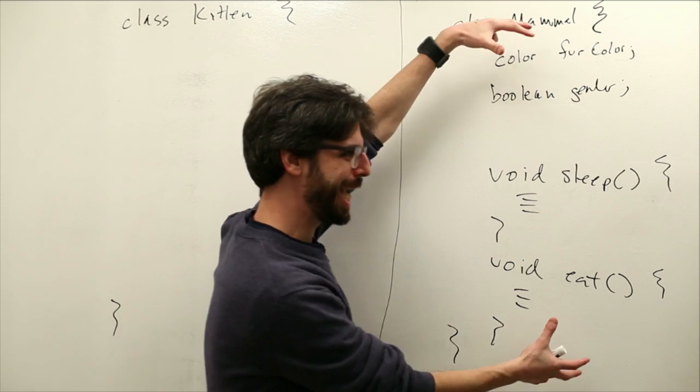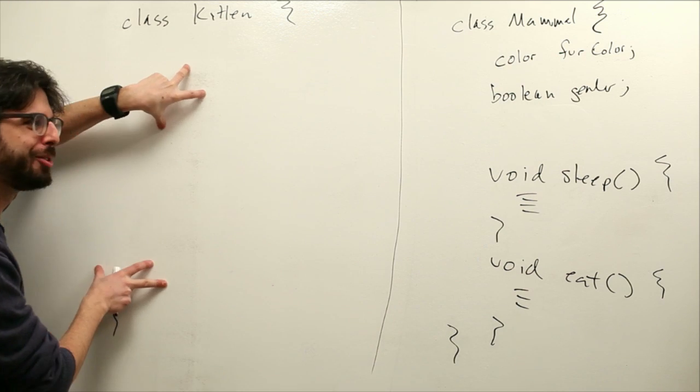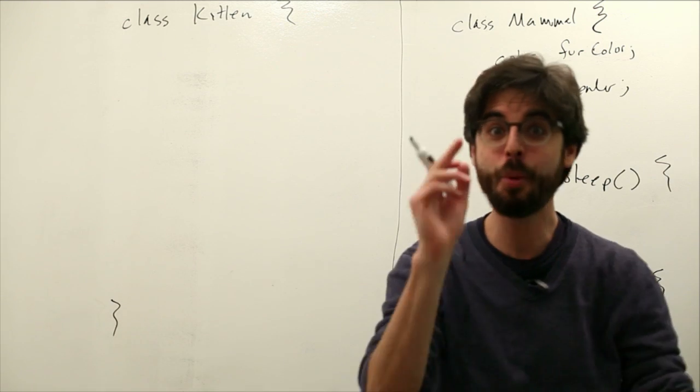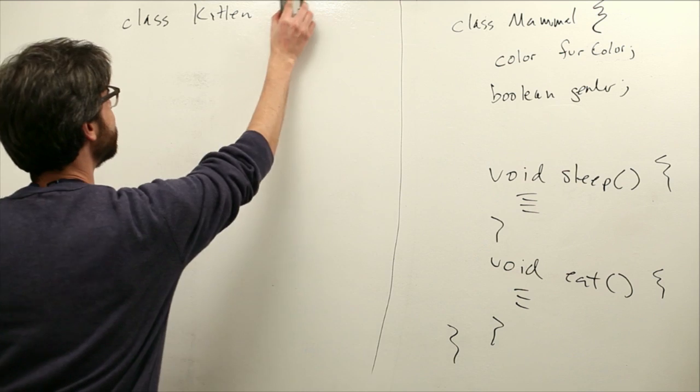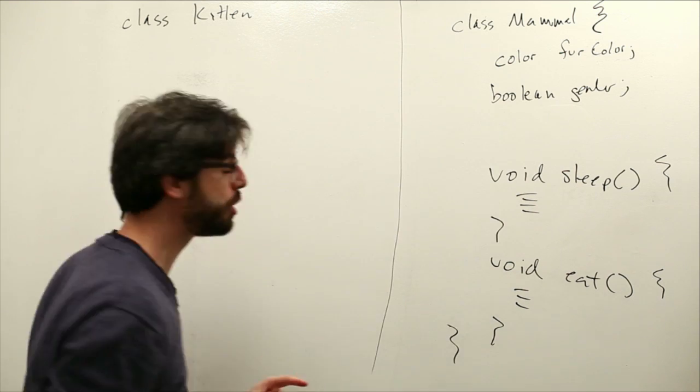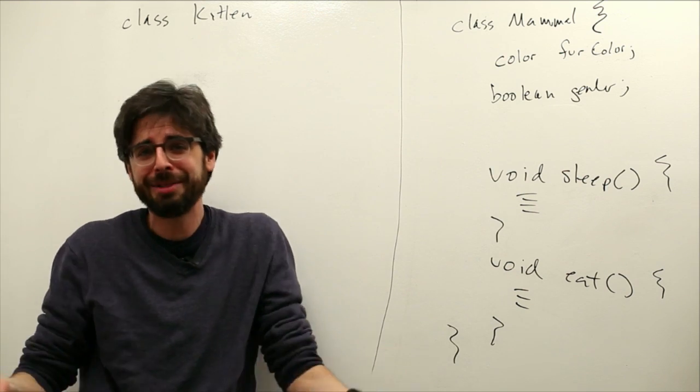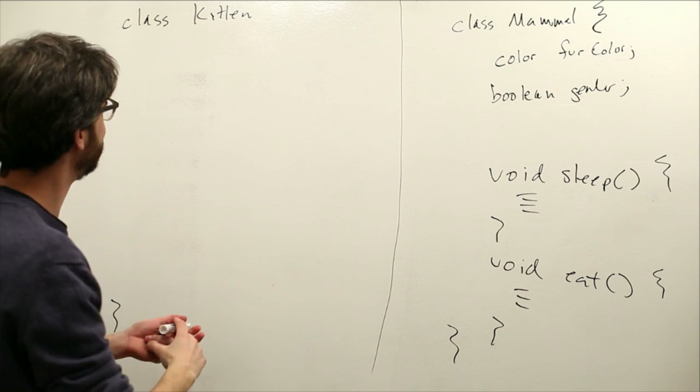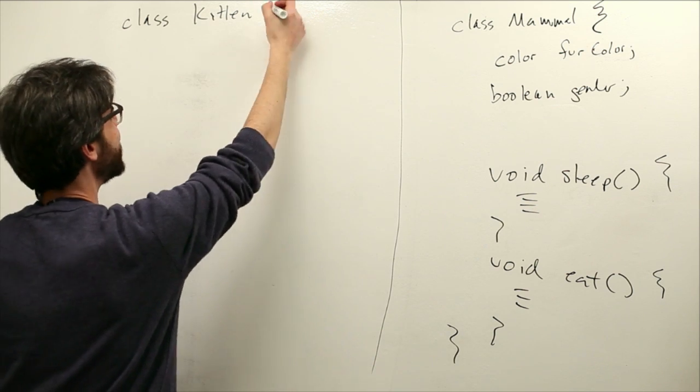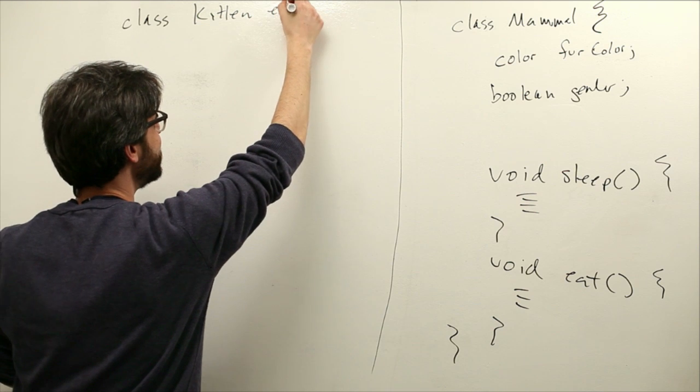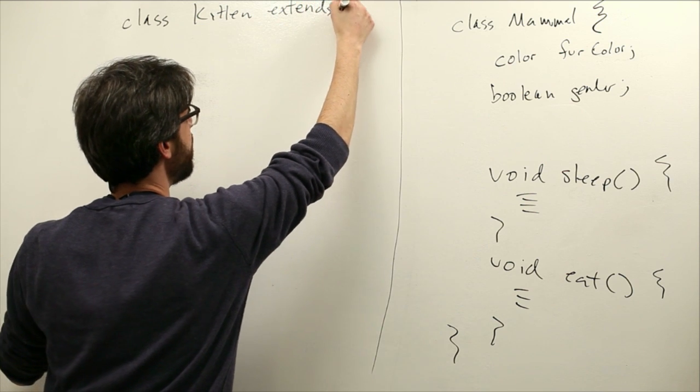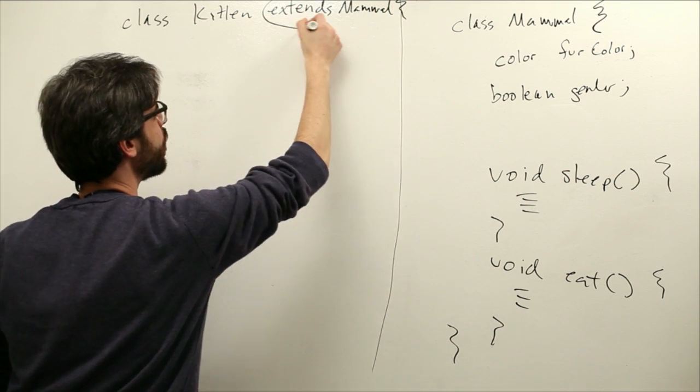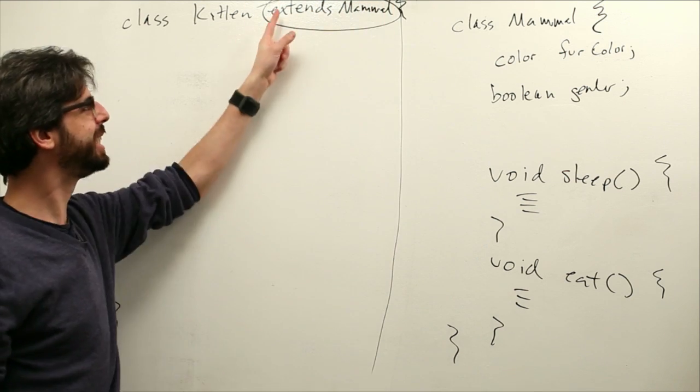We could copy, paste all this code so we start from the base mammal class, or we could use the principle of inheritance. And the way that we're going to use the principle of inheritance is with some new code. If you're watching this video, hopefully you haven't seen it before. Class kitten extends mammal. This is pretty important. Extends mammal.